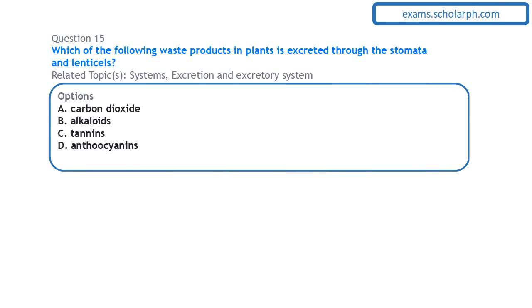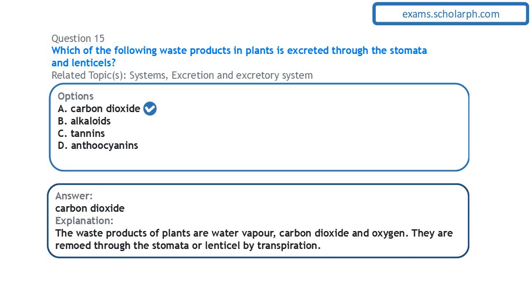Next on excretion: the waste products in plants that are excreted through the stomata and lenticels are carbon dioxide, water vapor, and oxygen.